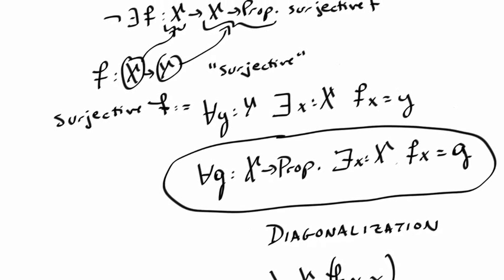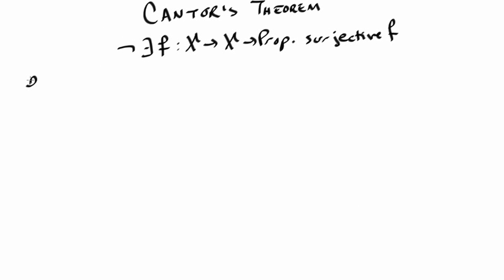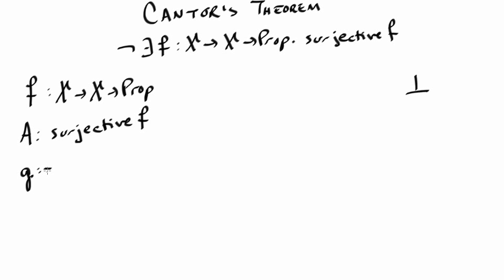So let's start doing the proof. We'll start off by assuming we have a function f from X to X to Prop and an assumption A that f is surjective. And we need to prove false. Now as I've already said, the idea of the proof is to use this assumption A with an appropriate g, and let's define this g locally to be the anti-diagonal lambda x, not f x x.